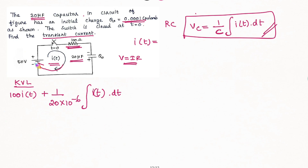The battery is negative in the loop, so we have minus 50. There are no other elements, so the full loop equation equals 0. We will now complete the loop equation.